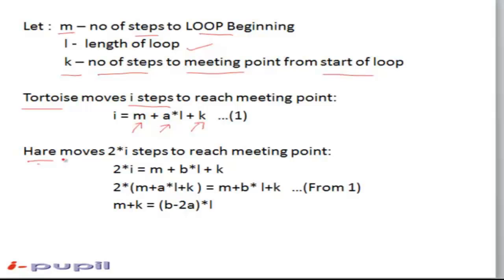Similarly for the hare, it will be moving 2*i steps, that is twice the number of steps taken by the tortoise to reach the meeting point. This 2*i will be equal to m plus k plus b times the loop length as described for the tortoise.